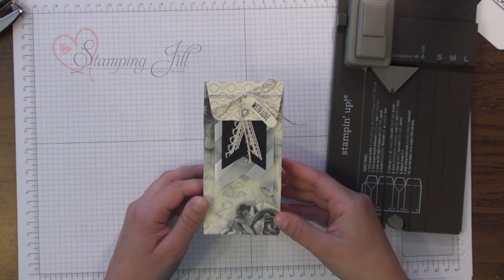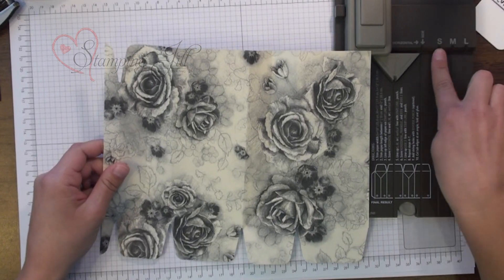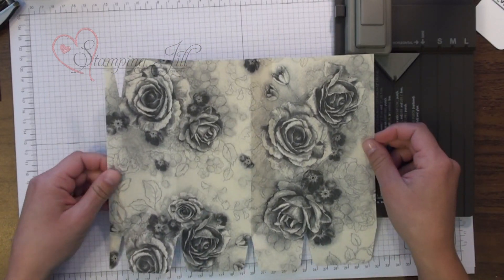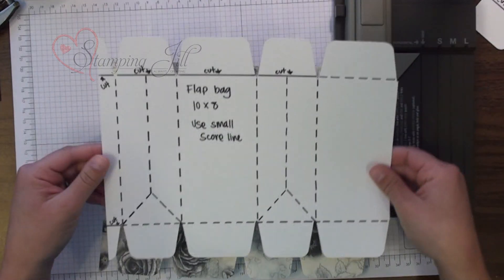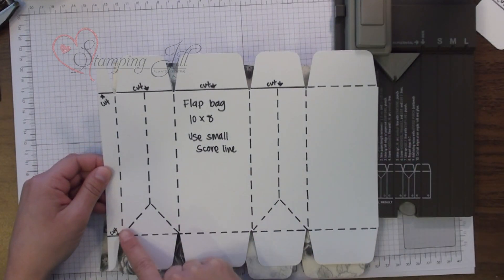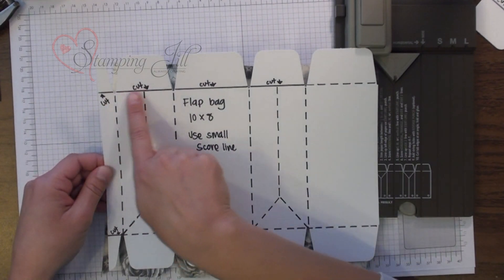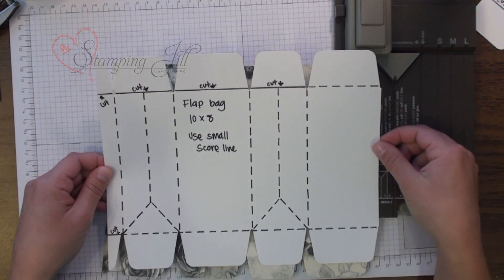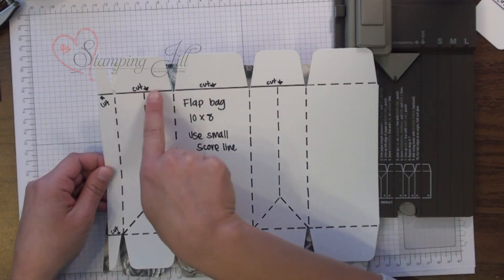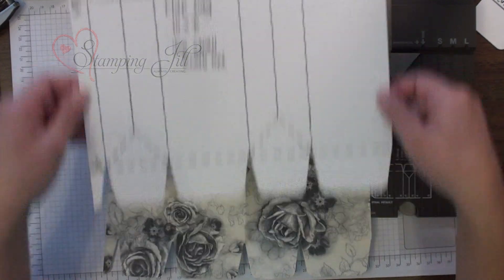I wanted to show you how I did that. So I used the small score line for this bag. The sizing on it is a 10 by 8 piece of paper and you'll score it normally like how you do and punch it down here, but then we're also going to punch the top up here too and you'll see we'll cut those four things off and leave this one. So I'll show you that.